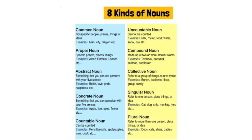Second, we have a proper noun. A proper noun is something which is specific — people, places, things. Example: Albert Einstein, London, etc. These are person's names which we can specify and understand.